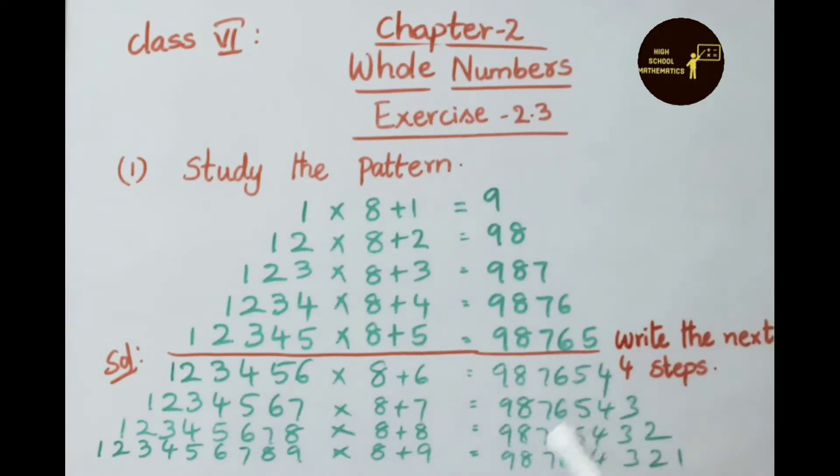Here on the right side, 8 + 6, 8 + 7, 8 + 8, 8 + 9, we increase one number. So here also in the answer, on each side one value is decreasing: 9, 8, 7, 6, 5, 4; 9, 8, 7, 6, 5, 4, 3. The same way values are decreasing.